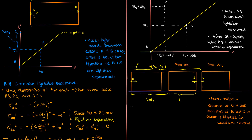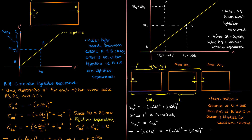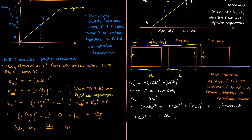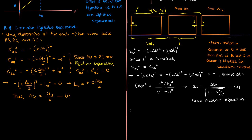Let's now calculate our spacetime intervals in reference frame R. The spacetime interval for A and C is negative c squared times delta t squared plus the x separation squared. By invariance this equals s' squared of AC, which we found earlier. This gives an equation relating the time interval delta t measured in R to the proper time interval delta t0 measured in R'. Multiplying both sides by negative 1 and isolating delta t, I find that delta t equals the proper time interval delta t0 divided by the square root of 1 minus v squared over c squared. This is my time dilation equation. I'll call this equation 2.